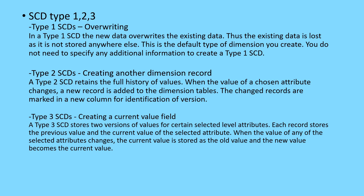SCD Type 2 retains the history of values. When a new record comes in, the dimension table is updated with the new value while the old record is preserved, maintaining historical data. SCD Type 3 creates a current value field — it stores two versions for certain attributes, so each record will have a previous value and a current value for the same attribute. If you have any questions regarding this video or any of the topics discussed, please comment — I'll be happy to explain. Thank you for watching.